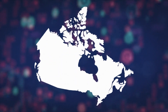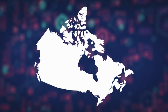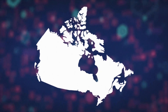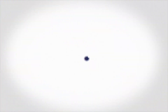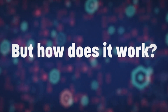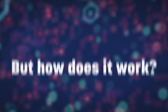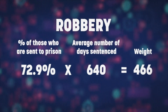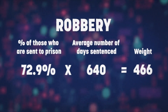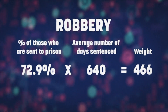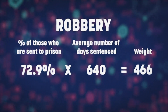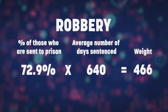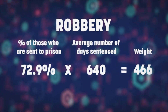It measures police reported crime in an area — a city, a province or territory, or the country. But how does it work? An area's CSI is determined by attributing a weight to each type of crime reported by police and then multiplying the number of crimes by their assigned weights.